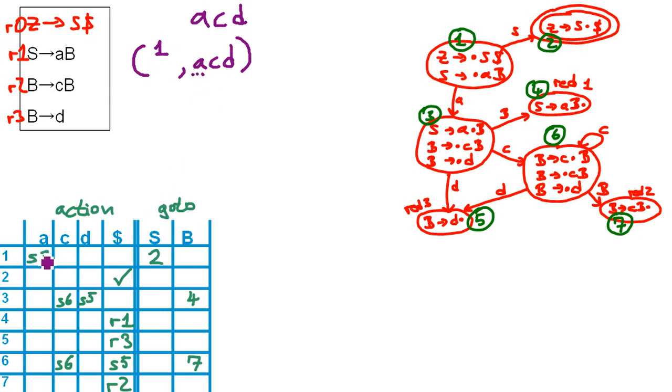So we check out the A and we see shift three. So we have a first state here. We shift the A, we end up in state three and we write all the non-processed symbols over here.